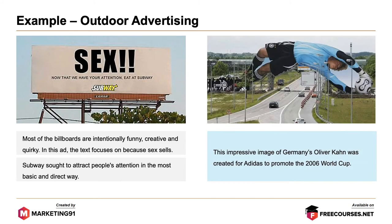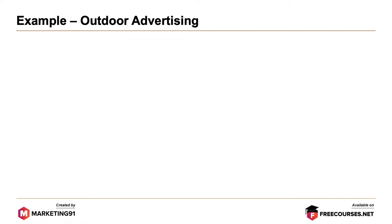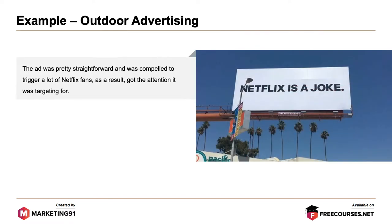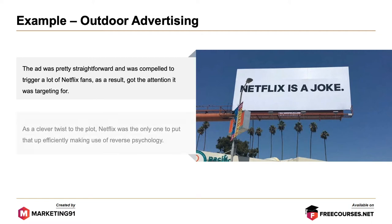Next, this impressive image of Germany's Oliver Khan was created for Adidas to promote the 2006 World Cup. Next, the ad was pretty straightforward and was designed to trigger a lot of Netflix plans. As a result, it got the attention it was targeting for. As a clever twist to the plot, Netflix was the only one to put that up efficiently, making use of reverse psychology.